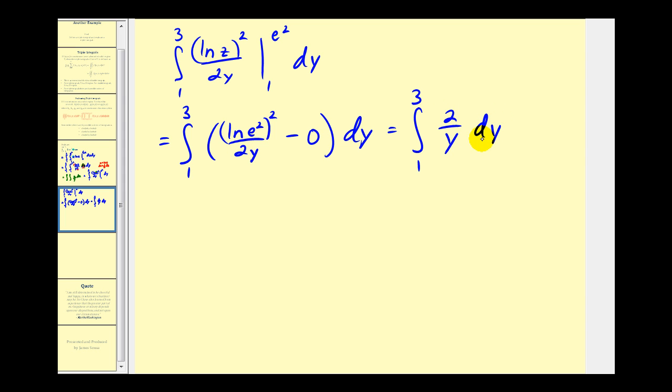And now if we integrate this with respect to y, we're going to have two natural log y. So we're going to have two natural log three minus two natural log one. But again, natural log one is equal to zero. So we'll have two natural log three.